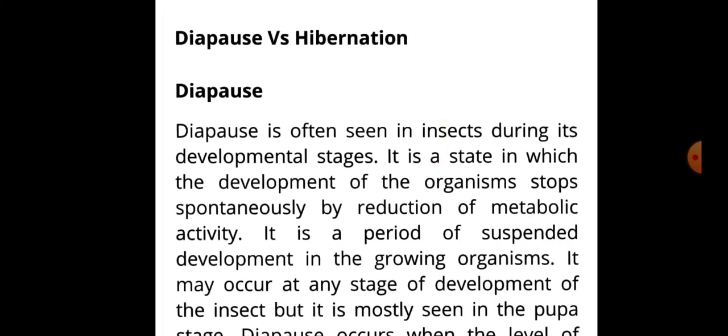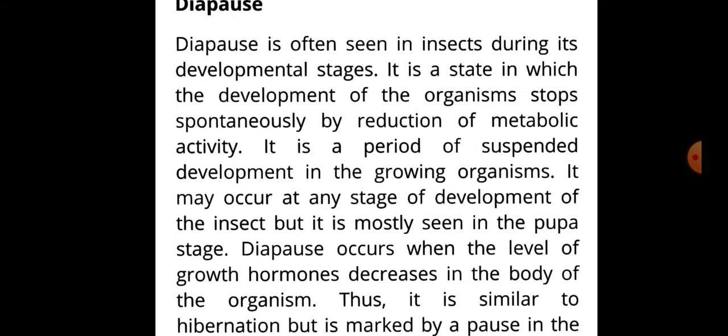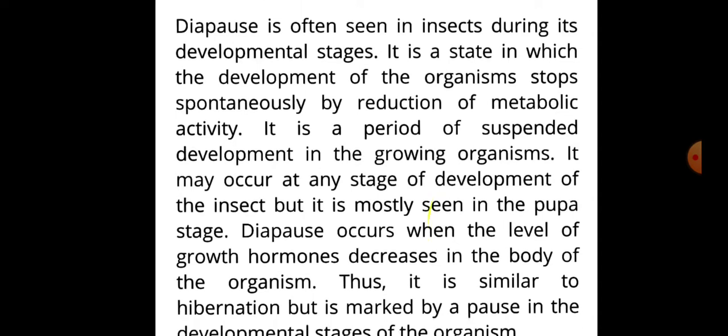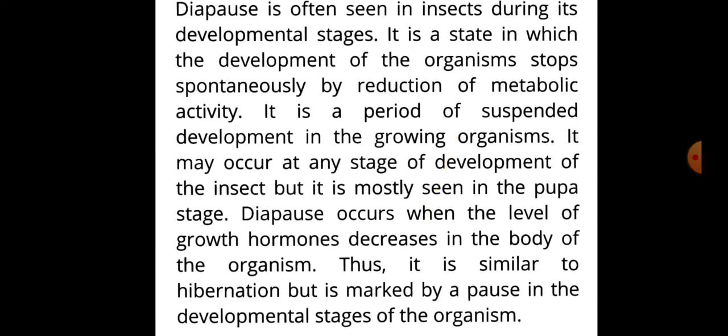Diapause versus hibernation: Diapause is often seen in insects during its developmental stages. It is a state in which the development of the organism stops spontaneously by reduction of metabolic activity — a period of suspended development in growing organisms. It may occur at any stage of development of the insect, but is mostly seen in the pupa stage. Diapause occurs when the level of growth hormones decreases in the body of the organism. Thus, it is similar to hibernation but is marked by a pause in the developmental stages of the organism.